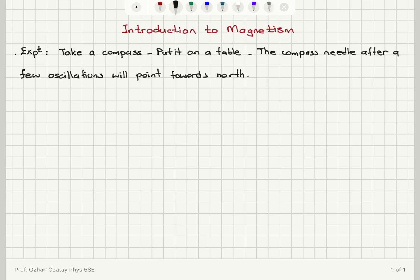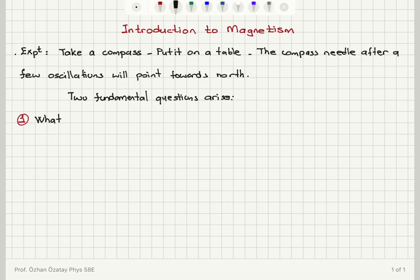The Earth acts as a giant magnet and the compass will point towards the magnetic south pole, which is close to the geographical north pole of the Earth. This observation gives us two fundamental questions. The first question we can ask is: what causes magnetic fields? And the related question is: what causes the Earth's magnetic field?